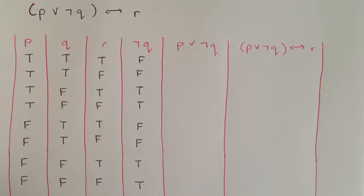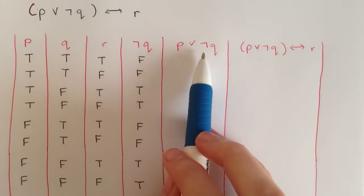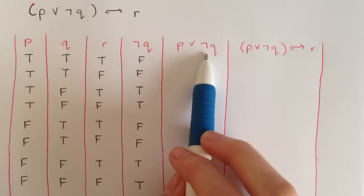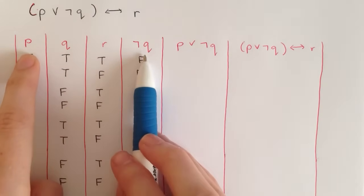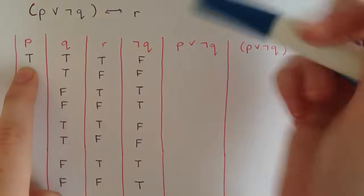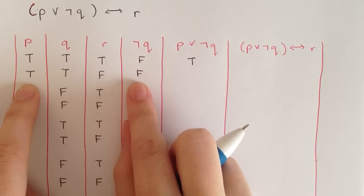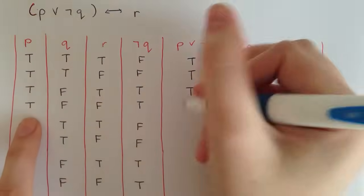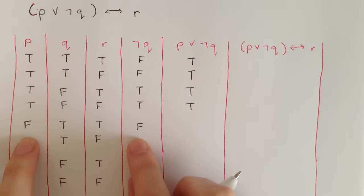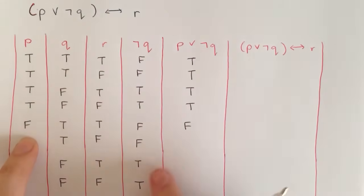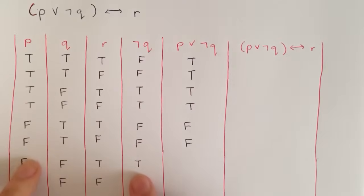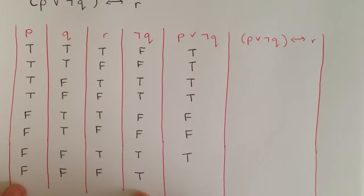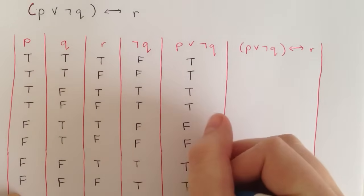Heading over to the next column: p or not q. For an OR, we want a true in either the p column or the not q column. True and false — at least one true, so true. True and false — true. True and true — true. True and true — true. False and false — no trues, so false. False and false — false. False and true — at least one true, so true. False and true — true.